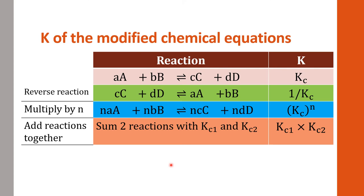However, the new K would be in relationship to the old one before modification. Here is the summary of K after we modify the chemical reaction — this is the value of K for each type of reaction. If we start with a reaction where AB are reactants and CD are products, we give this reaction Kc.